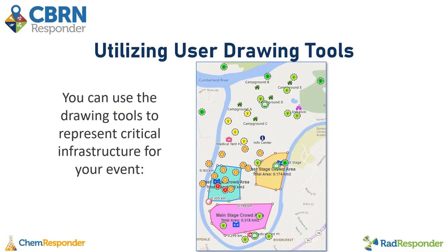You can also use the drawing tools to represent critical infrastructure for your event. Here is a training event done for a music festival where polygon shapes were used to display stage crowd areas, and the point feature was used in multiple ways to represent items such as a campground, medical tents, information centers, entrances, and stages.